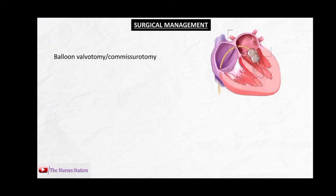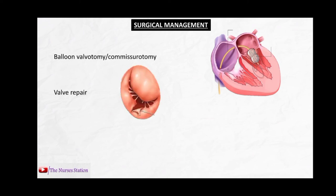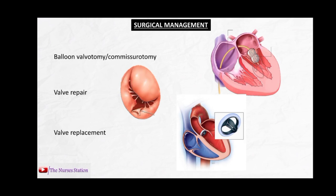For patients with chronic complications due to valve involvement, surgical options are available. Balloon valvotomy or commissurotomy involves inserting a catheter through the artery and advancing it to the affected valve; the narrowed valve is opened by gently inflating a balloon at the catheter tip to allow more normal blood flow. Valve repair is an open-heart surgical procedure where the surgeon repairs the shape and function of the damaged valve leaflets. Valve replacement is also an open-heart procedure where the surgeon removes the damaged valve and replaces it with a mechanical prosthetic (metallic valve) or a bioprosthetic valve (tissue valve).